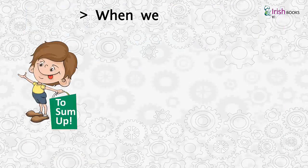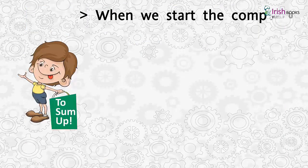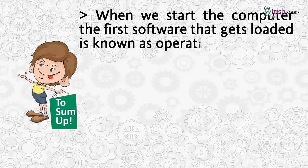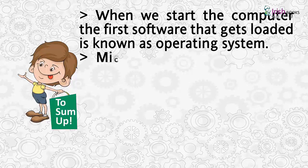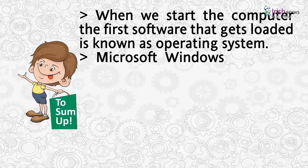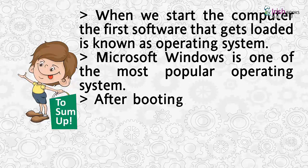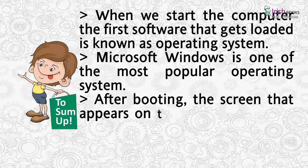Summary: When we start the computer, the first software that gets loaded is known as the operating system. Microsoft Windows is one of the most popular operating systems. After booting, the screen that appears on the monitor is called the desktop.